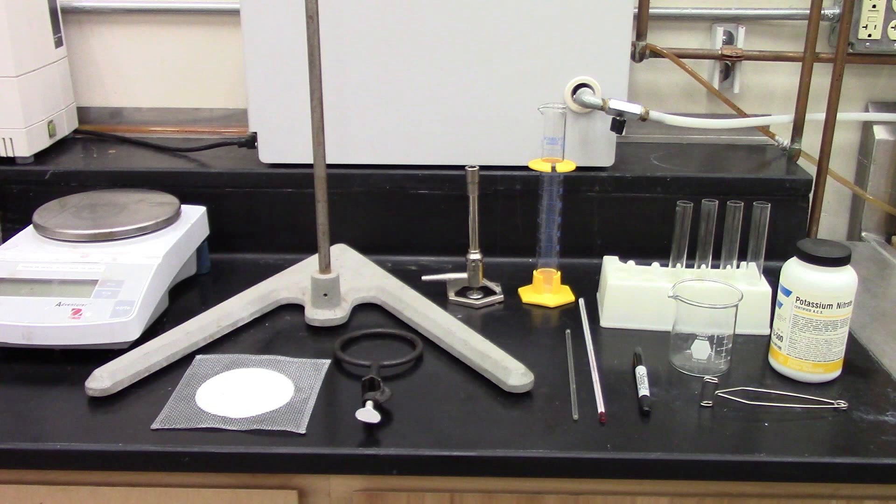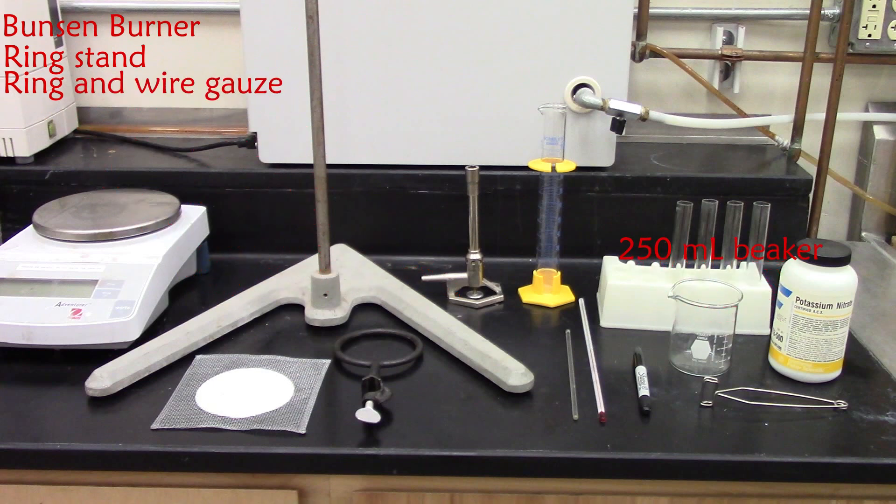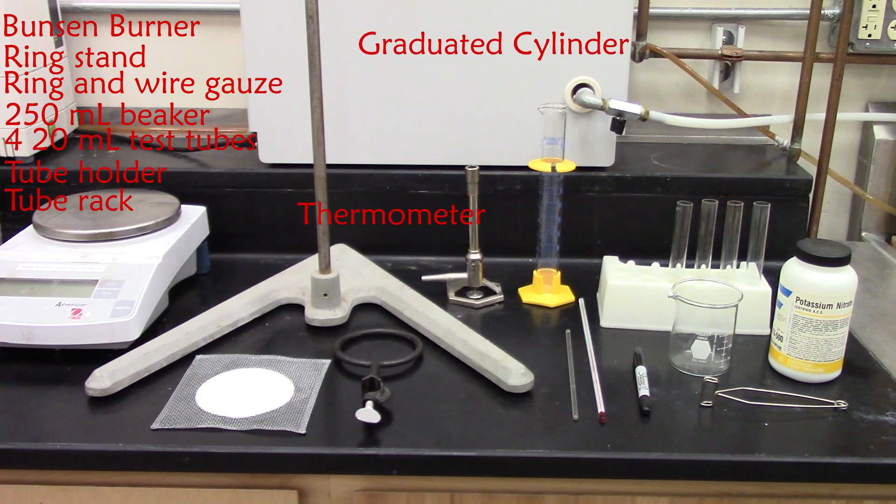To conduct the exercise, you will need a Bunsen burner, ring stand, ring and wire gauze, a 250 mL beaker, four 20 mL test tubes, a tube holder and rack, thermometers, graduated cylinder, and a marker for labeling test tubes.